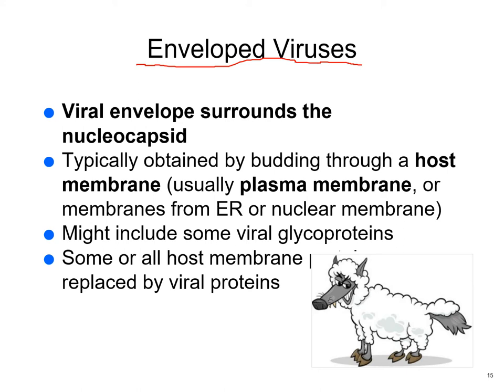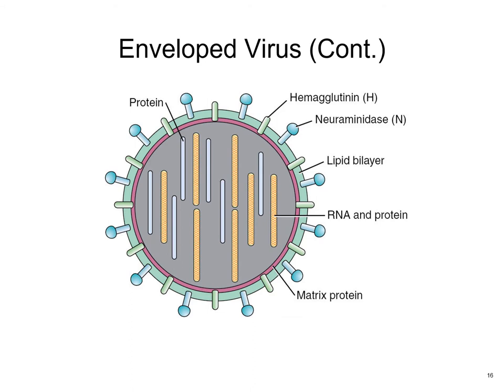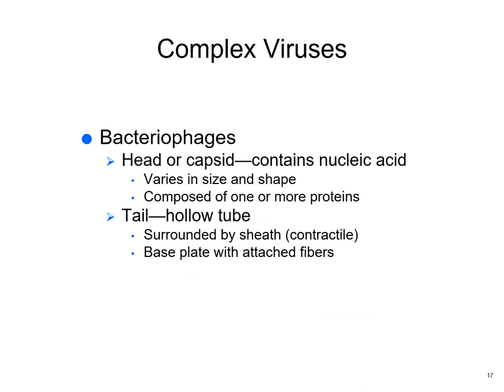Enveloped viruses are the opposite of naked viruses. The envelope surrounds the nucleocapsid and forms when the virus buds through the host membrane, taking some of the plasma membrane with it. Think of it as a wolf in sheep's clothing: if that enveloped virus gets into your body wearing your own plasma membrane, your immune system might not notice it quickly, making it a trickier virus for your immune system to deal with.